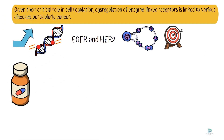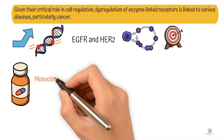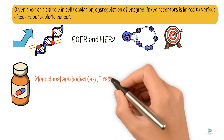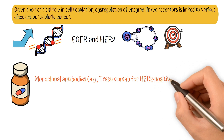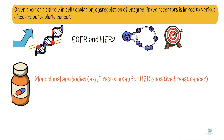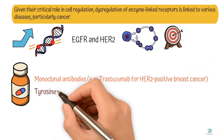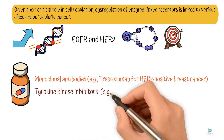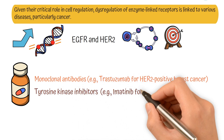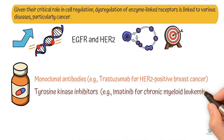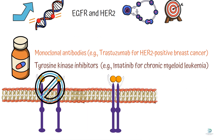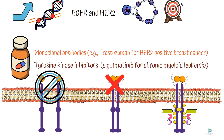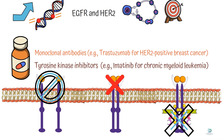Several drugs have been developed to target these receptors, including monoclonal antibodies — for example, trastuzumab for HER2-positive breast cancer — and tyrosine kinase inhibitors — for example, imatinib for chronic myeloid leukemia. These therapeutics work by either blocking ligand binding, preventing dimerization, or inhibiting kinase activity to halt aberrant signaling.